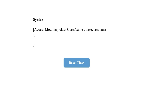The base class is also called a super class or parent class. From the base class we create a new class — that is the derived class. The derived class acquires the properties of the base class. The derived class is called a child class or sub class, and the base class is called a parent class or super class. There are a number of names for base class and derived class.